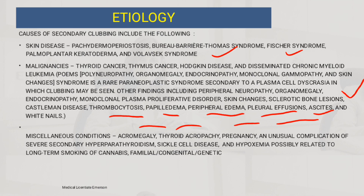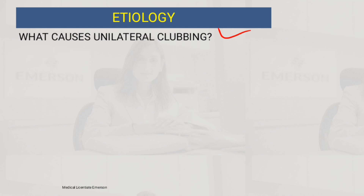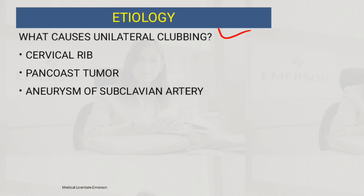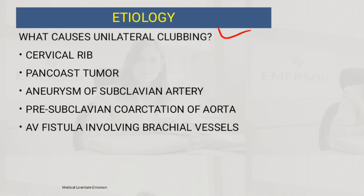We classify causes as primary and secondary, then secondary causes are classified by system. What causes unilateral clubbing — meaning someone presents with finger clubbing on one side? Causes include cervical rib, Pancoast tumor, aneurysm of the subclavian artery, pre-subclavian coarctation of the aorta, and arteriovenous fistula involving brachial vessels.